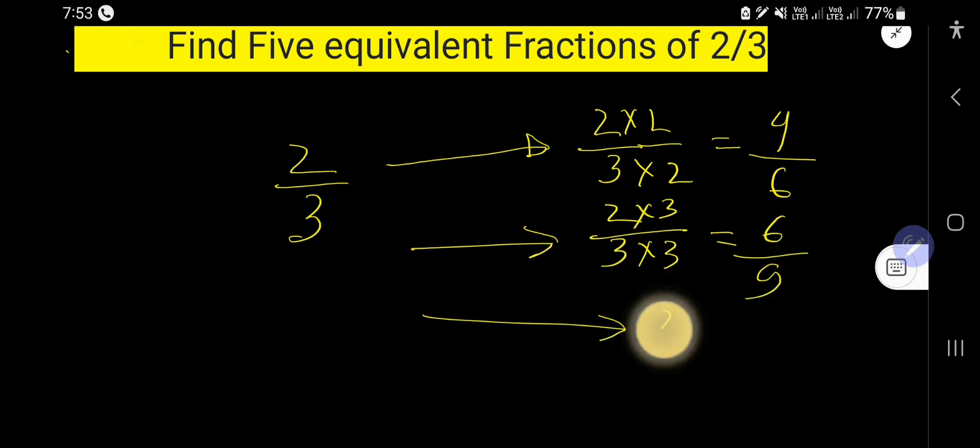Now you can multiply by 4. After 3, you can multiply by 4. So you are getting 4 times 2 is 8, and 3 times 4 is 12. So this is the third equivalent fraction.